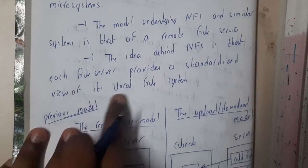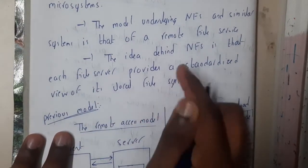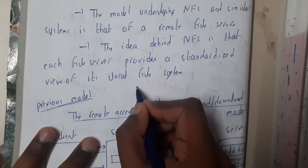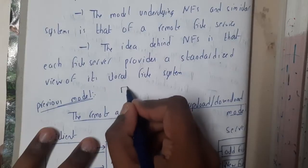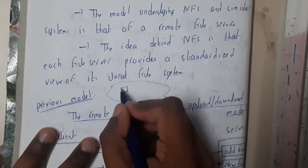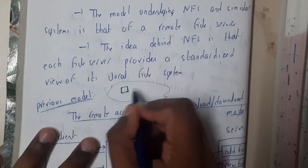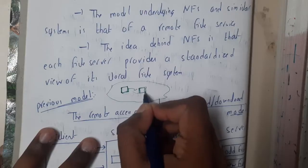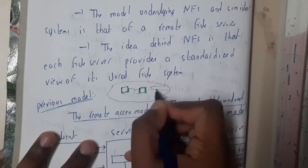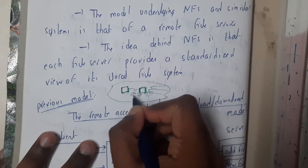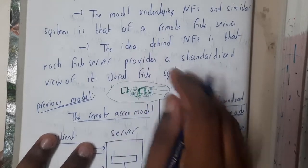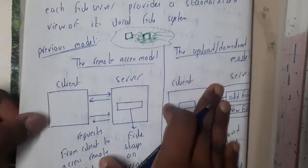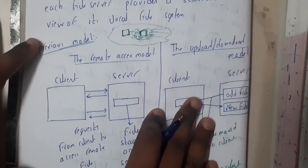To explain NFS simply: each file server provides a standard view of the local file system. Assume you are working in a huge company and you want to share a file with everyone — you place your file on the server or on the network so that everyone can access and download it. This sharing of your file system or files is what we call a Network File System. This was the previous model used.